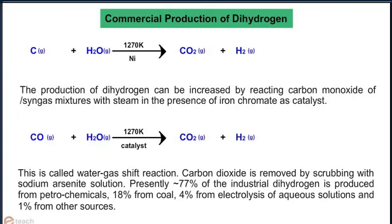Presently, 77% of the industrial dihydrogen is produced from petrochemicals, 18% from coal, 4% from electrolysis of aqueous solutions, and 1% from other sources.